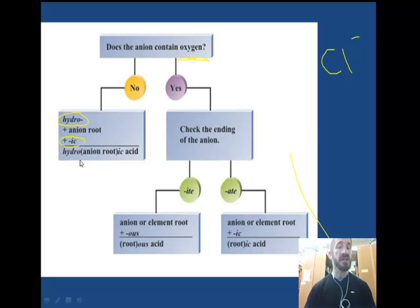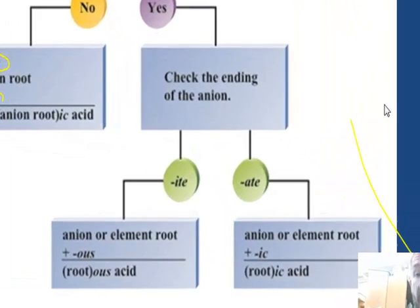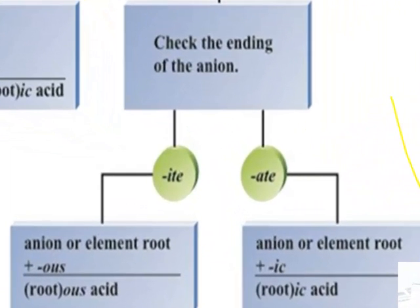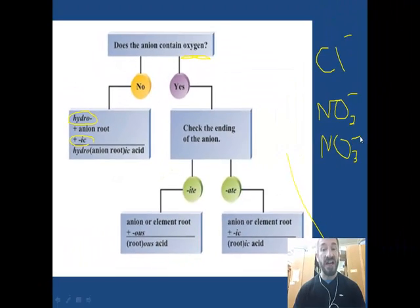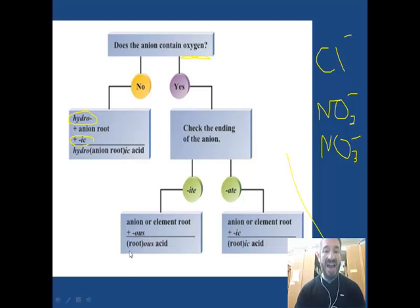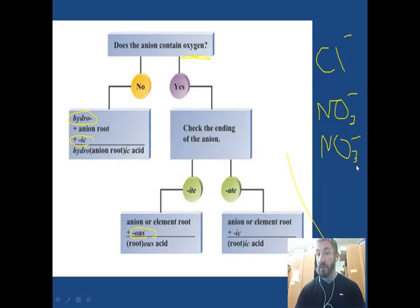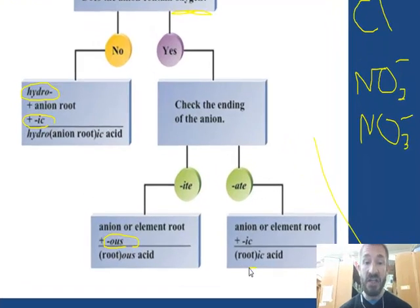Now how do you name acids that do contain oxygen? These oxyacids fall into two categories. For example, you could have NO2⁻, which is called nitrite, or NO3⁻, which is called nitrate. For nitrite, the 'ite' becomes 'ous', so we call it nitrous acid. For nitrate, it becomes nitric acid.